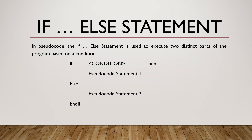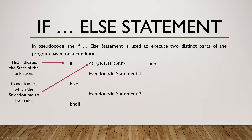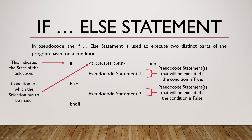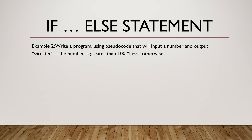An example of an if-else statement has been given to you. We're going to break this down: we have 'if' to indicate the start of the selection, a condition for which the selection has to be made, then a pseudocode statement executed if the condition is true, and a pseudocode statement executed if the condition is false — after the 'else' part — and lastly 'end if' to indicate the end of the selection.